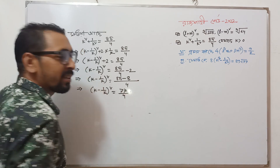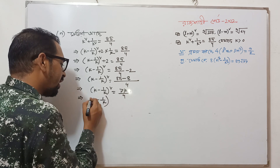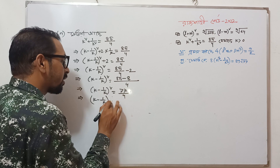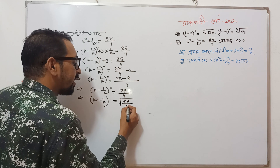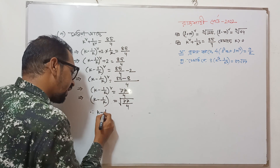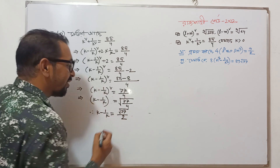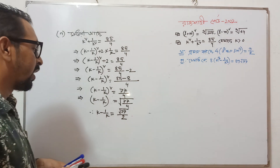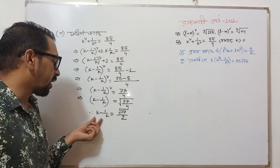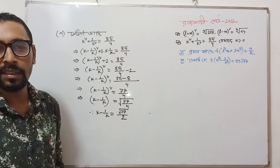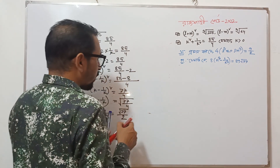So, k minus 1 by k whole square equal to 77 divided 4. Taking root: k minus 1 divided k equal to root over 77 divided 2.